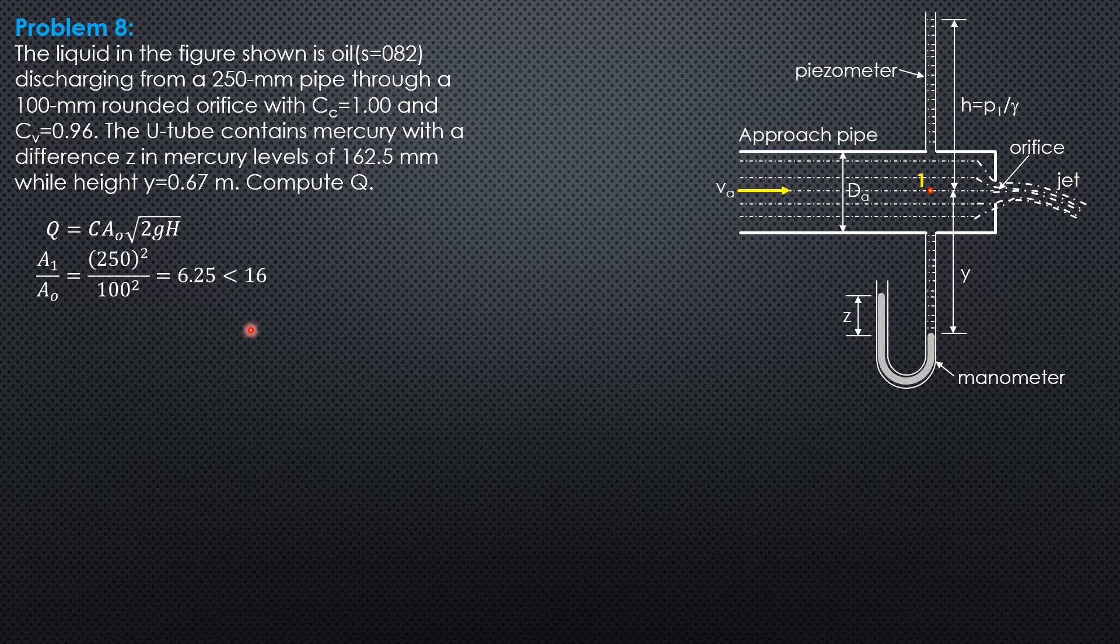V_1 is 4Q/(πD_1²), so this is the velocity head at point 1 plus pressure head at point 1 in terms of the flowing liquid, which is oil in this case. V_1 is 4Q/(π × 0.25²), so 20.37Q. We square this divided by 2g, or 19.62.